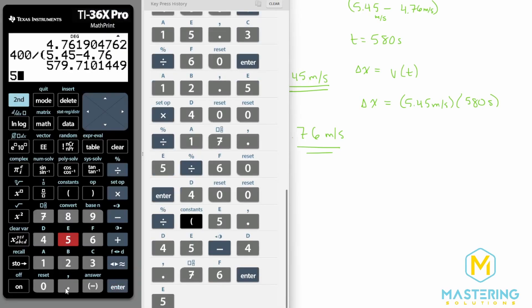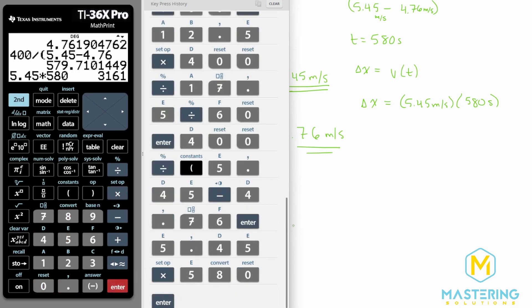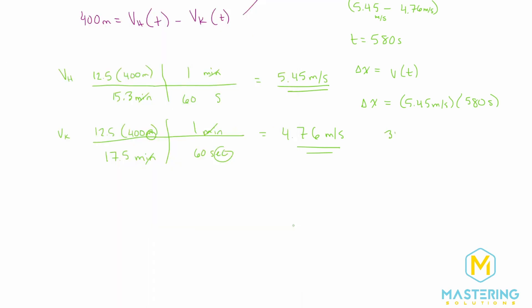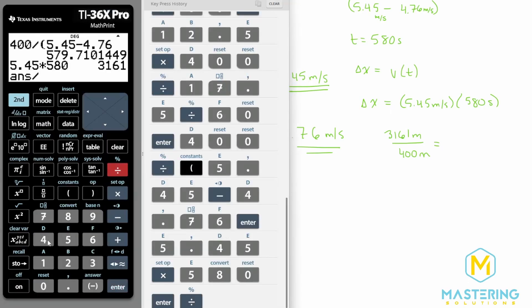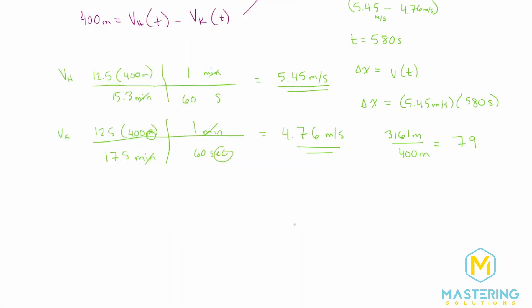So 5.45 times 580. We have 3161. And what is that? That is meters. So it was 3161 meters. Each lap is 400 meters. So finally, if we take that and divide it by 400, we have 7.9 laps. So this is how far Hannah has run when she passes Kara in the race.